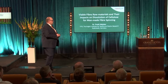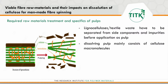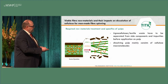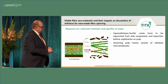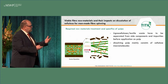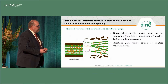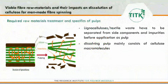Let's start with characterization of these pulps in more detail. From lignocellulose and also from textile waste, these materials have to be separated from side components and impurities before they can be used as a pulp. At the beginning, coming from wood, there is a mixture of different components — mostly lignin, cellulose, and hemicellulose — and in the pulping process you end up with cellulose consisting of macromolecules.